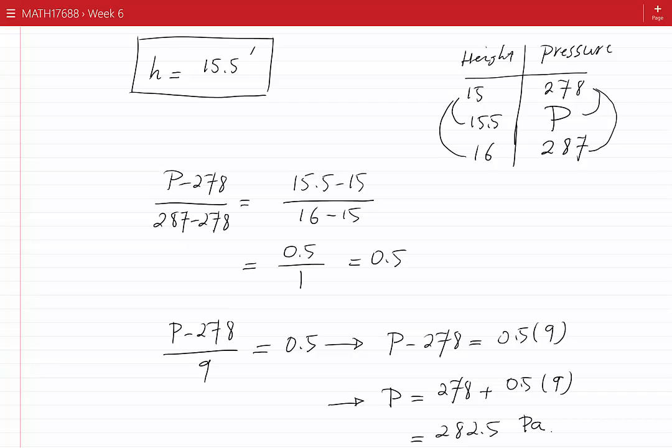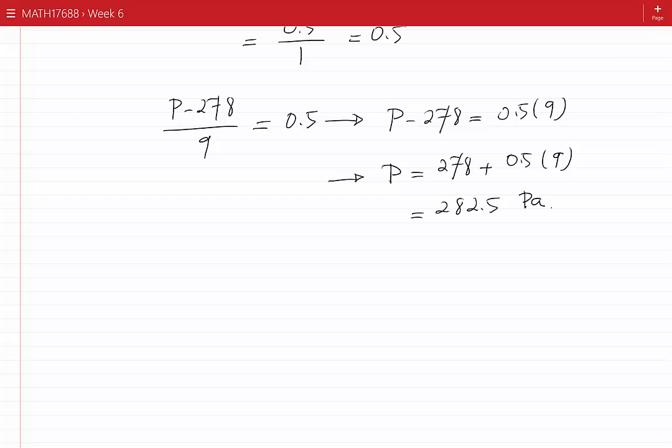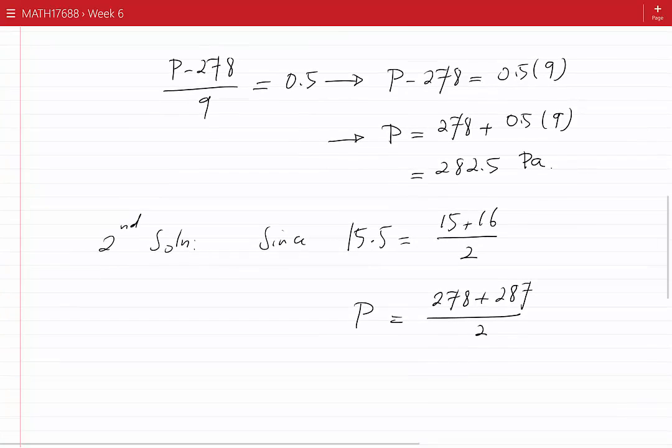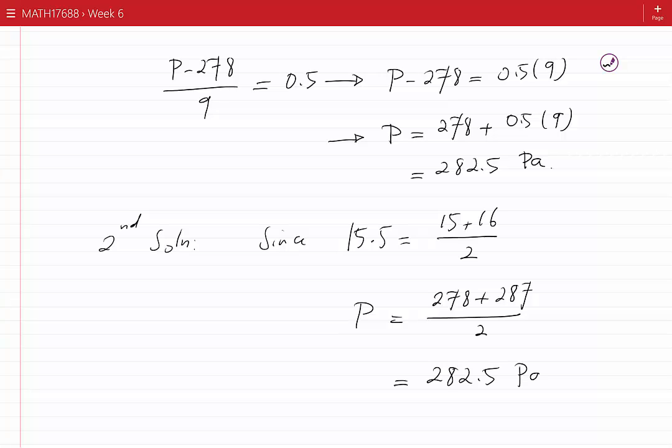The pressure would also be the average of 278 and 287. As a second solution, since 15.5 equals 15 plus 16 divided by 2, the pressure equals 278 plus 287 divided by 2, which equals 282.5 Pascals, as we found before.